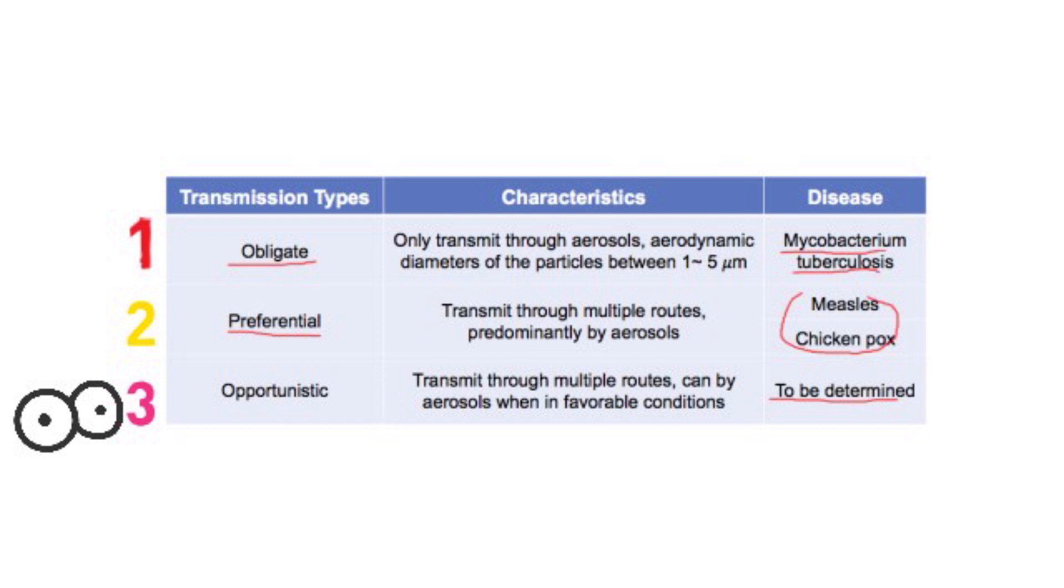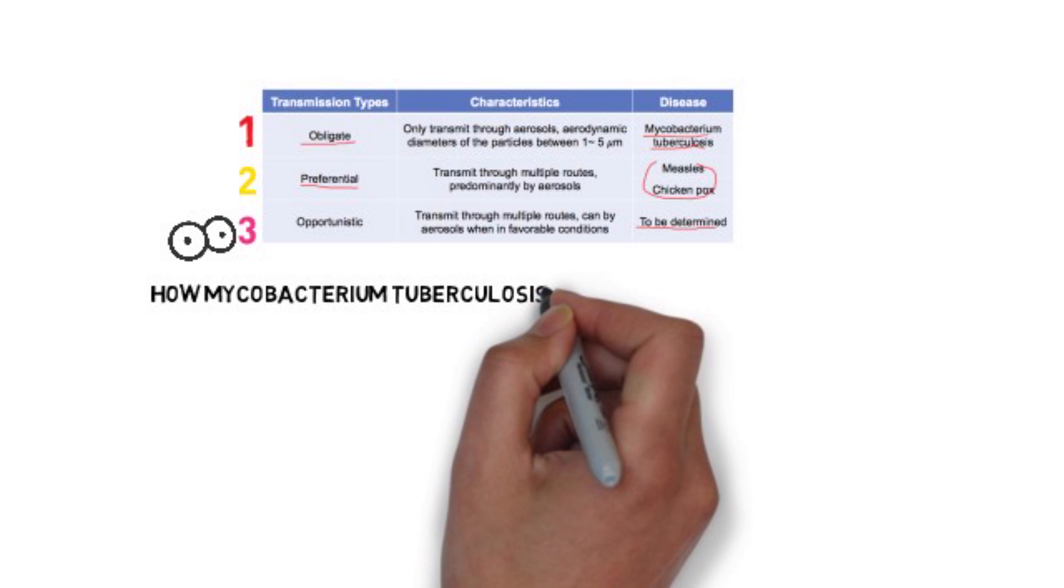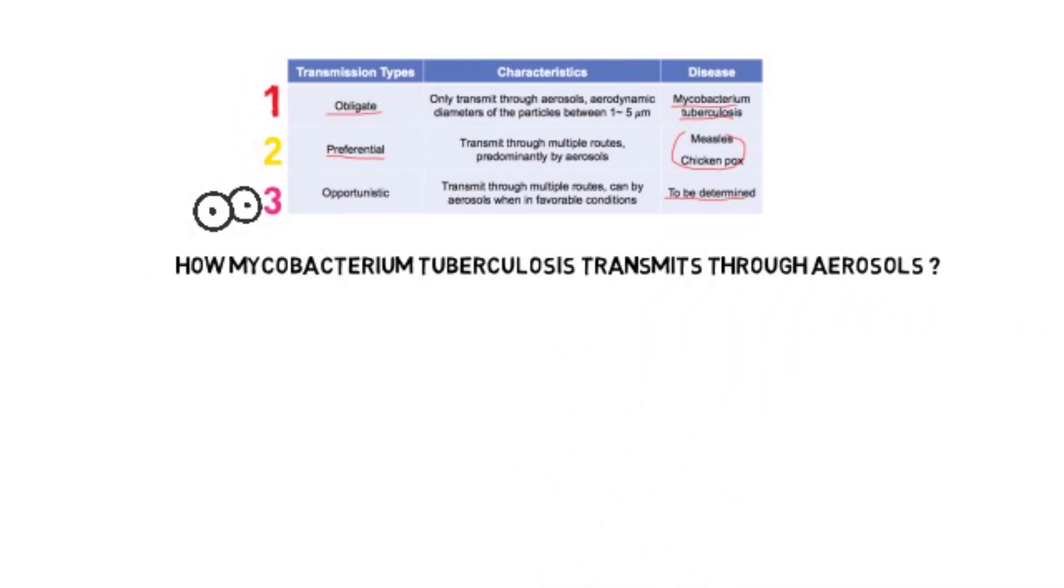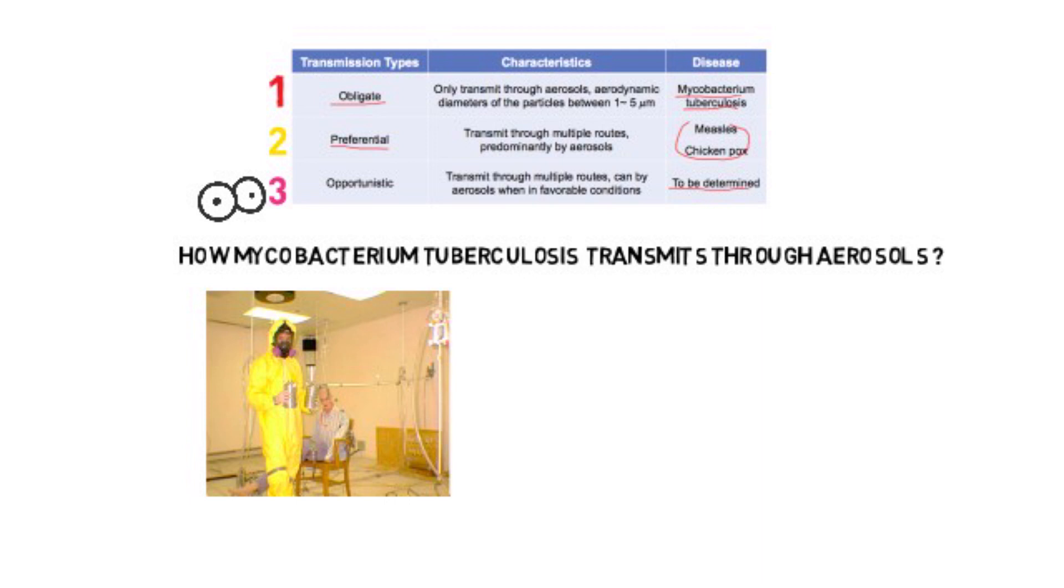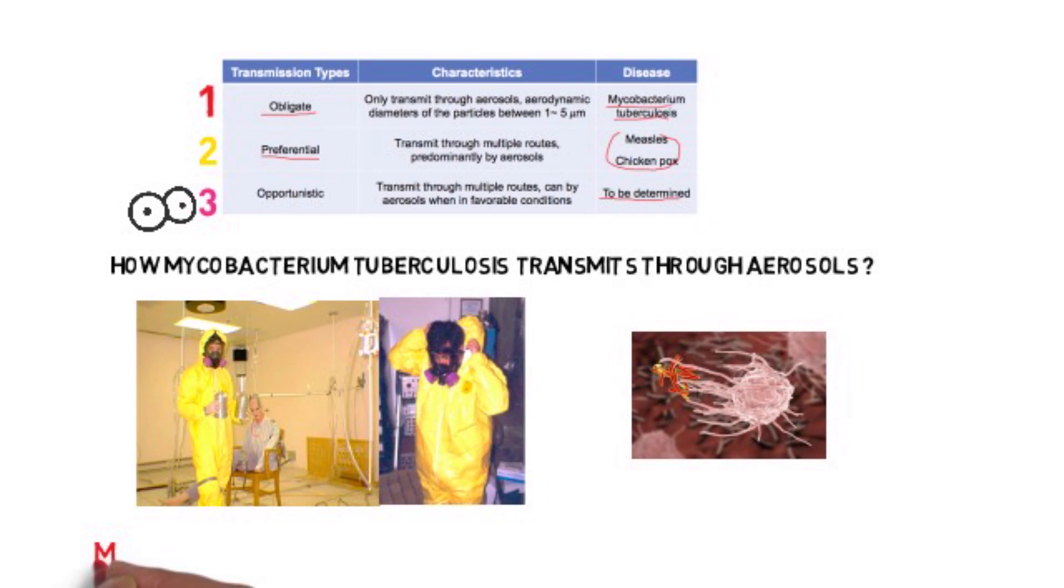Is the COVID-19 coronavirus transmit through opportunistic transmission? We don't know. I have done laboratory research on how mycobacterium tuberculosis transmits through aerosols at the National Jewish Health Hospital in Denver, Colorado. This is me wearing the protective suit. Still have a lot of hair, then. Literature shows this disease can transmit through aerosols, and I have observed it myself.